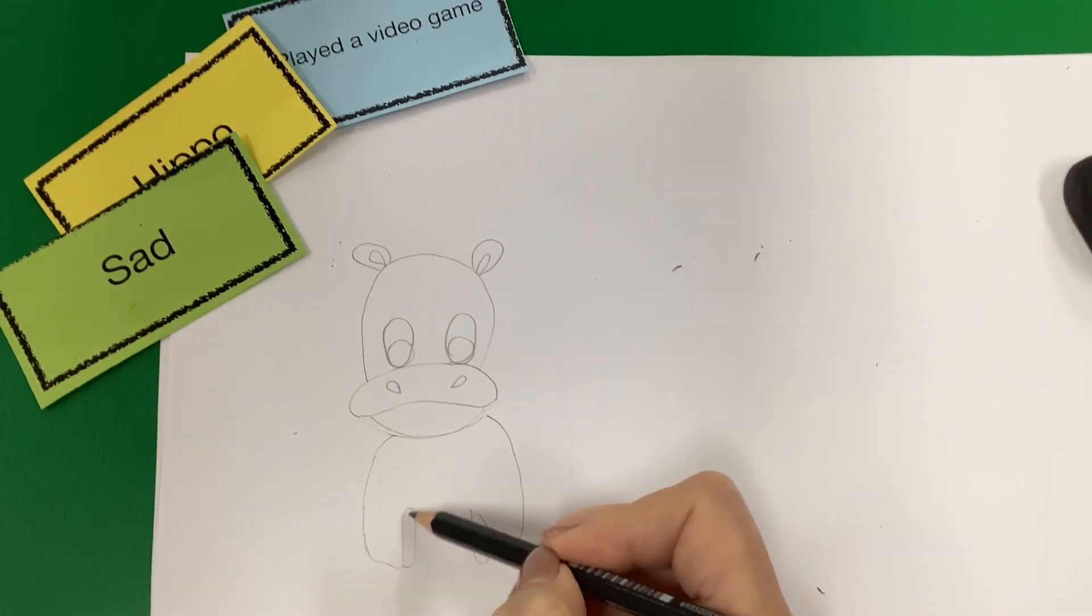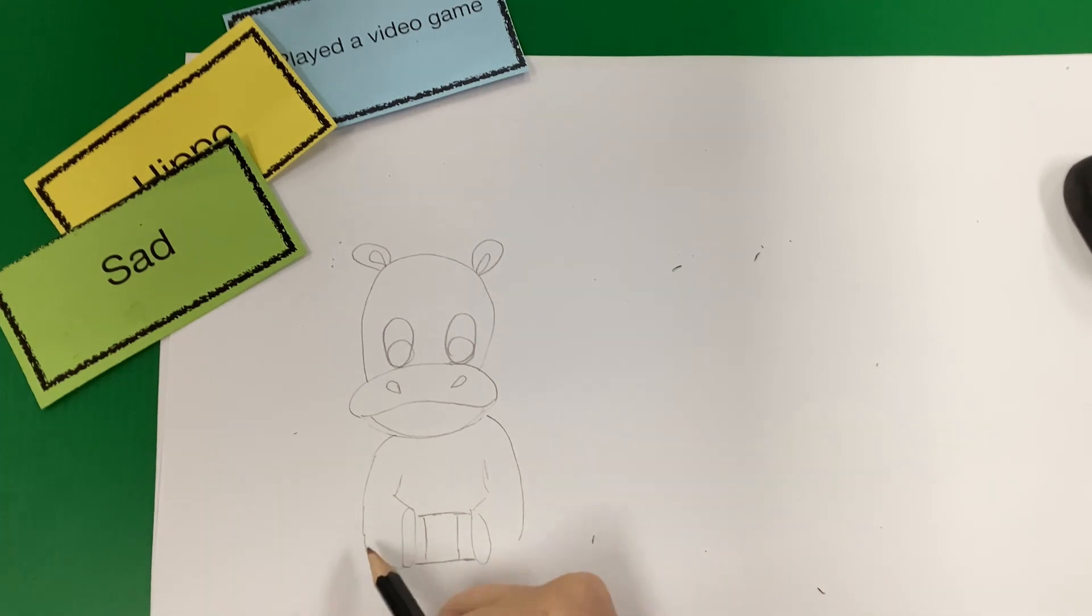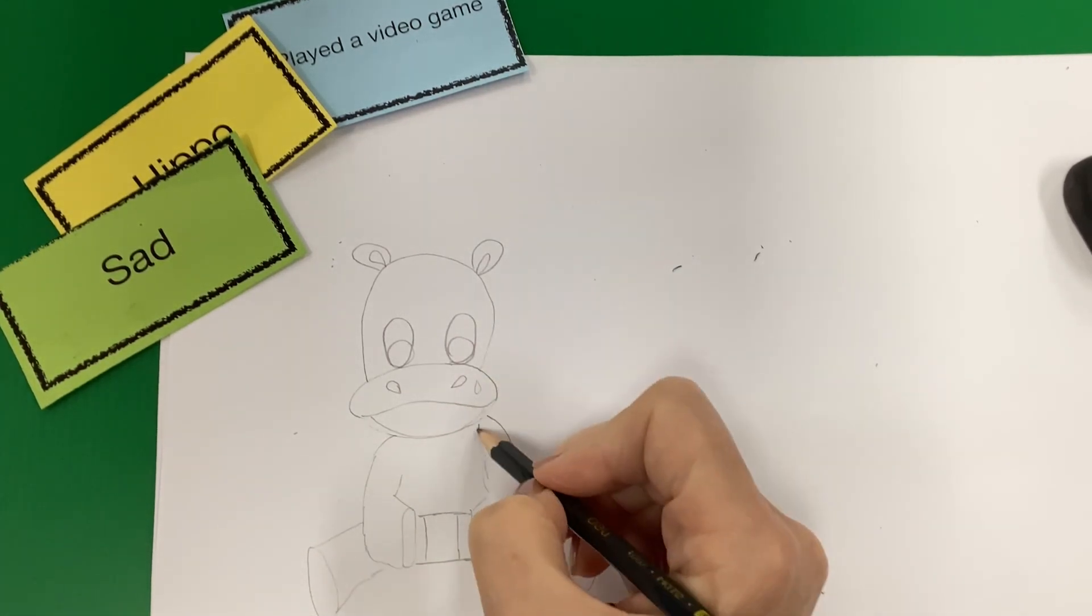And I think I'm going to have him playing his Nintendo Switch because that's super easy to draw. I don't know why he'd be sad if he's playing one of his favorite video games. Hmm, I wonder why.